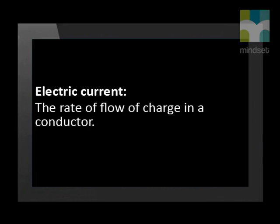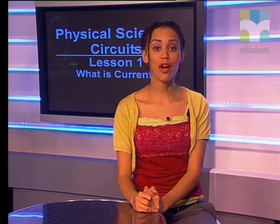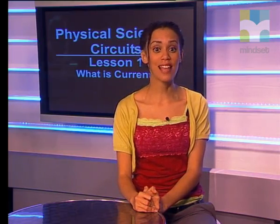Current is the rate of flow of charge in a conductor. Bruce explained that current refers to charges that travel through the circuit. As they do so, they transfer energy provided by the cell to the various parts of the circuit. We will further investigate this transfer of energy and how this causes a battery to go flat later in this series.